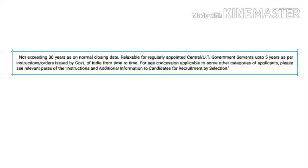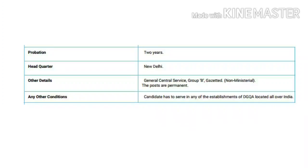I have attached the link for this notification in the description box. You can check that notification for full information. After selection, candidates must go through a two-year probation period. This is a General Central Service Group B Gazetted Officer job and the post is permanent.